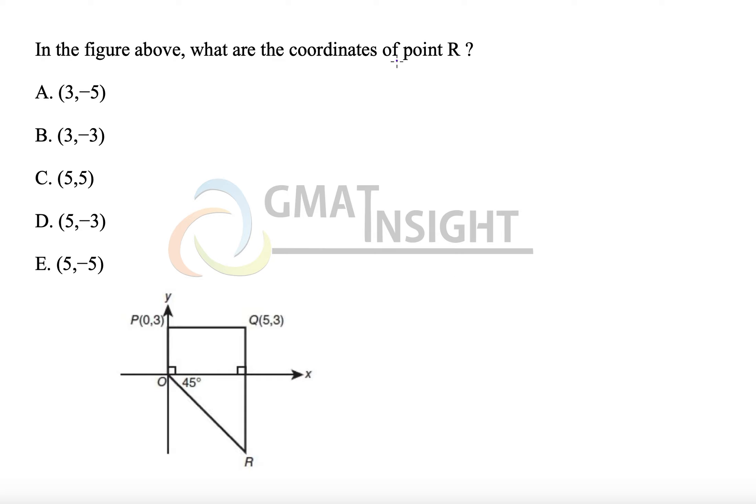In the figure what are the coordinates of point R? So we have PQR, R point is here, this is the fourth quadrant.